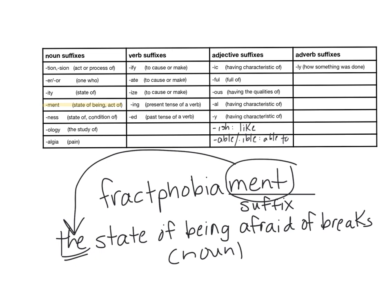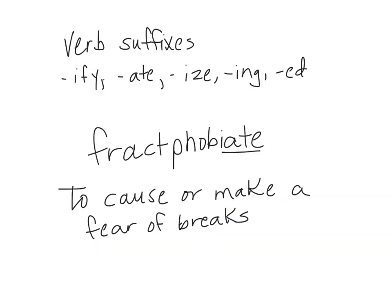Now we're going to take this word and turn it into a verb. I took my original word fract phobia — fract meaning break, phobia meaning fear — and I chose the verb suffix -ate. Because phobia ends in A, I don't have to add another A. When writing my definition, the suffix definition comes first: -ate means to cause or to make. So fractphobiate means to cause or make the fear of breaks. For example: 'Breaking both of my ankles caused me to fractphobiate from here on in, especially in the winter.' If you can use it as a verb, it is a verb.